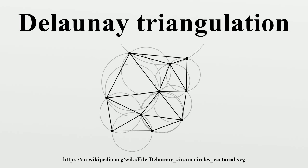The most straightforward way of efficiently computing the Delaunay triangulation is to repeatedly add one vertex at a time, re-triangulating the affected parts of the graph. When a vertex V is added, we split in three the triangle that contains V, then apply the flip algorithm. Done naively, this will take O(n) time per insertion. If we insert vertices in random order, each insertion will flip on average only O(1) triangles, although sometimes it will flip many more.